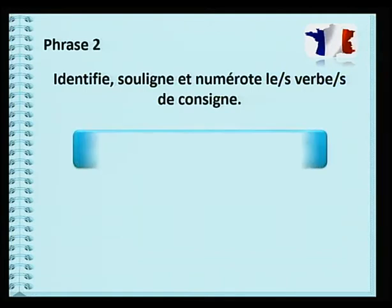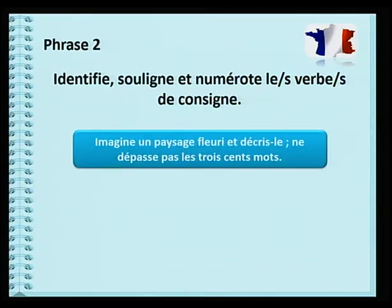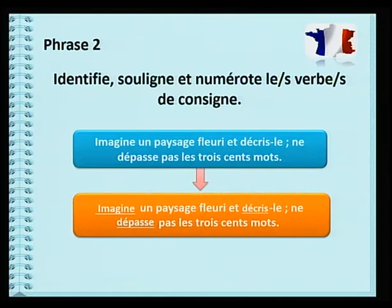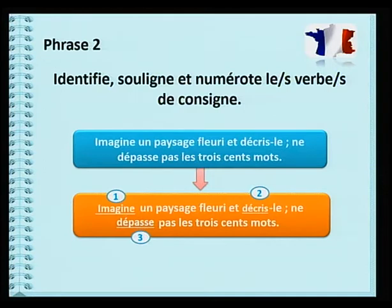Deuxième phrase: «Imagine un paysage fleuri et décris-le. Ne dépasse pas les 300 mots.» Donc, quels sont les verbes de consigne? Les verbes de consigne sont «imagine», «décris», «dépasse». Tu devras imaginer un paysage, puis décrire ce paysage imaginé, et surtout, ne pas dépasser la limite de mots.